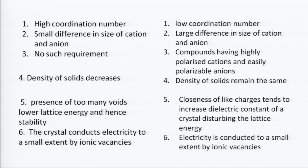Now let us look at the differences between Schottky and Frenkel defects, which are important from an exam point of view. In case of Schottky defect, high coordination number compounds show this defect. For Frenkel defect, low coordination number compounds show this defect. In Schottky defect, since both cation and anion are missing, the size difference is immaterial. In Frenkel defect, since one ion must fit into the interstitial space, there must be a large difference in size — the cation must be small to be accommodated there. In Frenkel defect, highly polarized cations and easily polarizable anions are required; no such requirement exists for Schottky defect.